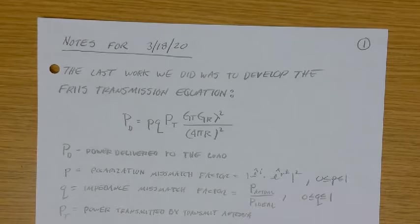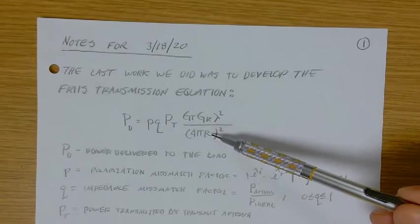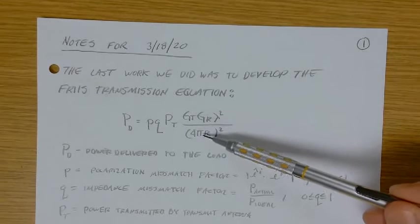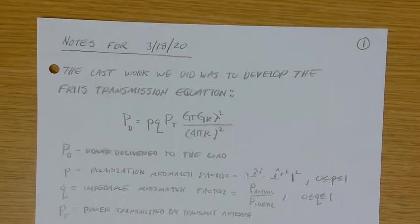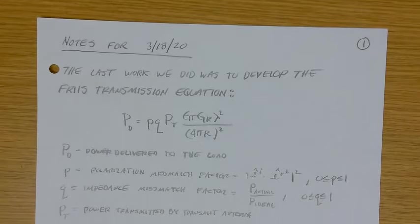So that's just simply the actual power delivered to the load on the received side of the system divided by the ideal amount of power, the maximum amount of power that the received antenna could deliver to the load. P sub T, power transmitted by the transmitting antenna. G sub T, gain of the transmit. G sub R, gain of the receiving antenna. Wavelength, obviously ratio of the speed of light to frequency of operation. R is the distance between the transmitter and the receiver, and that goes as the square. So the power received or the power delivered falls off inversely proportional to the square of the distance away.